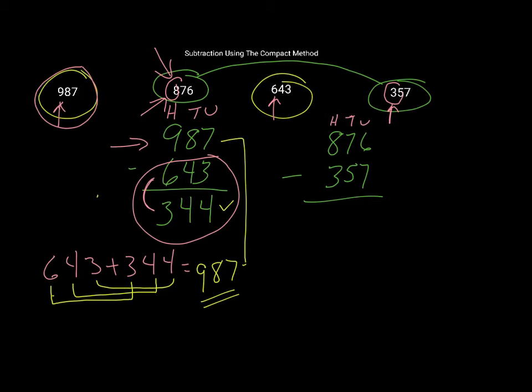So 6 subtract 7. Obviously I can't do that, so I have to borrow from the tens column, and this becomes a 6 and this becomes 16. So that 16 subtract 7 gives me 9.